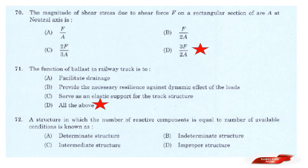Question: A structure in which the number of reactive components is equal to the number of available conditions is known as? Options: Determinate structure; Indeterminate structure; Intermediate structure; Improper structure. Answer: Option A — Determinate structure.